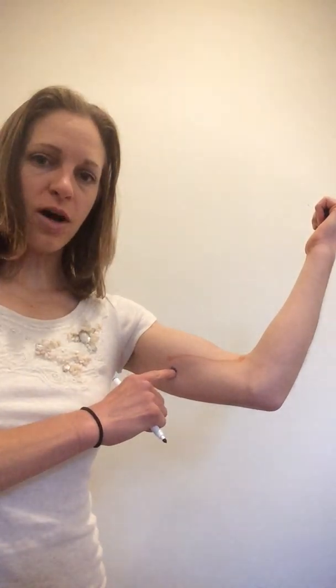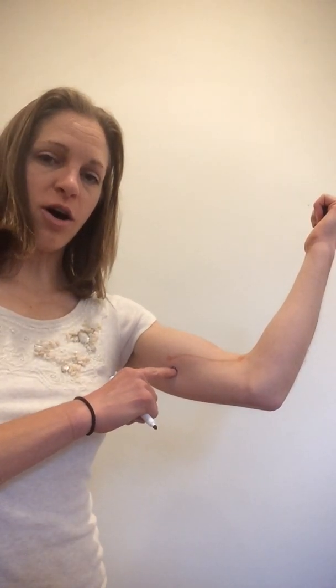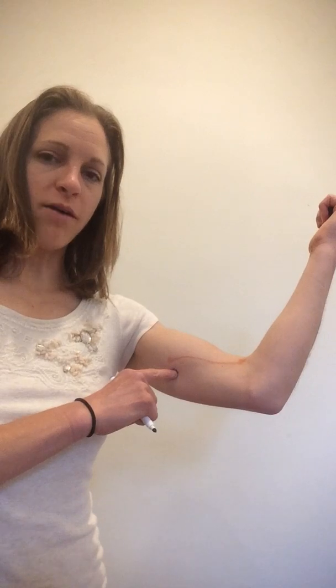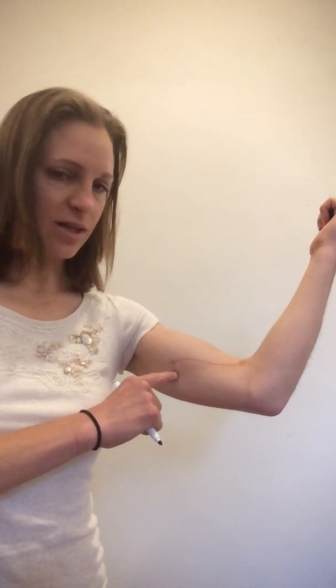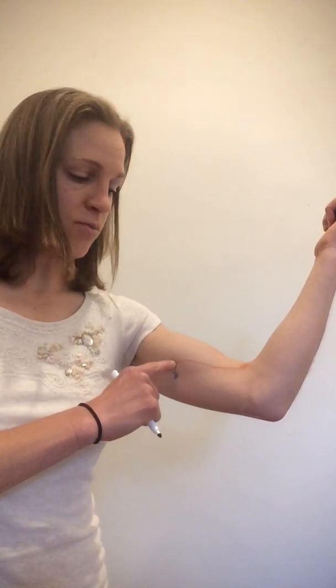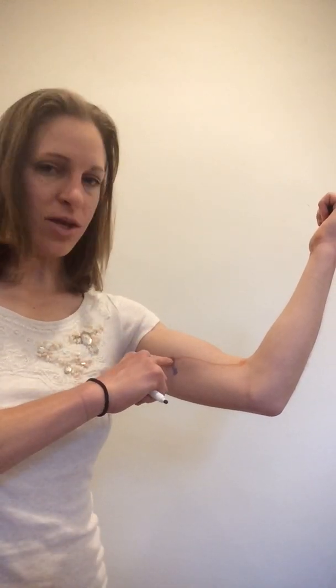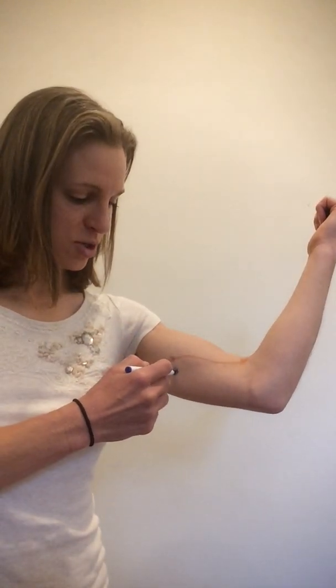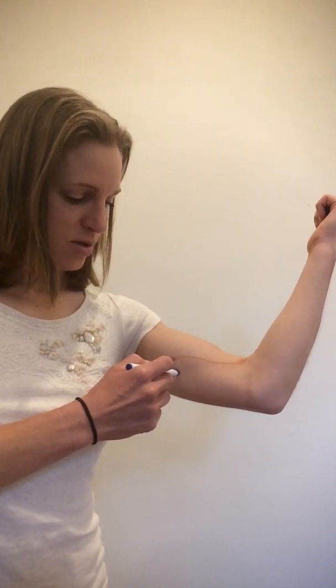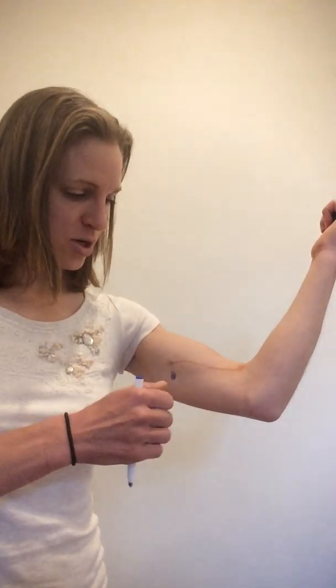If you remember, the ulnar nerve comes off. It's the terminal branch off the medial cord of the brachial plexus, so it makes sense that it's a little bit more medial to the median nerve, which is going to have contributions from the lateral cord and the medial cord from the brachial plexus. I smudged a little bit. So there is going to be the first place I'm going to draw my ulnar nerve.